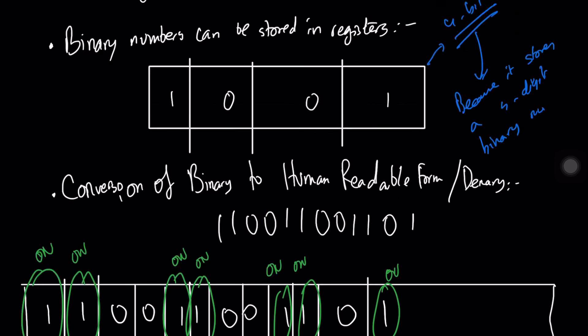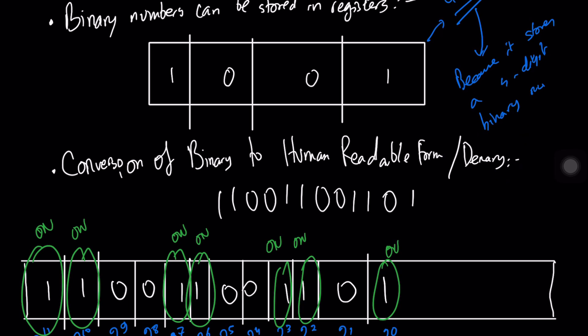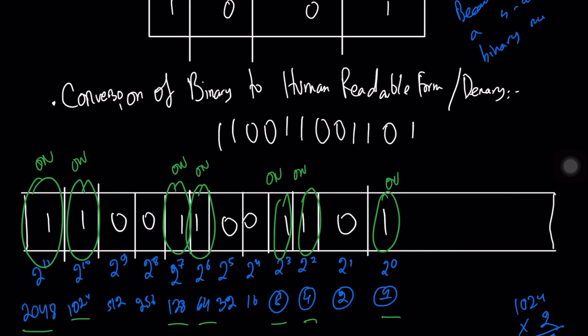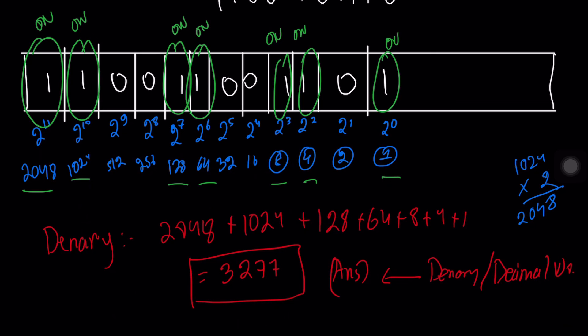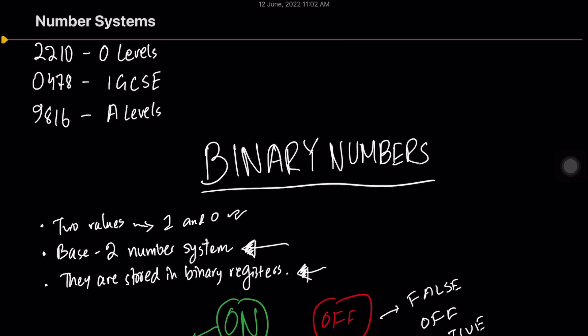So these are the basics of binary numbers: they are base-2 numbers, they are stored in registers, and the number of digits tells us the bit size — for example, a four-digit binary number is called a 4-bit binary number. This is how you convert binary to denary, the human-readable form. We'll talk more about denary numbers in a separate video. That wraps up today's video — hope that helps, and I'll catch you in the next one!